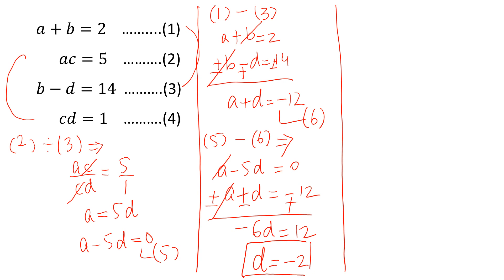Now put D is equal to minus 2 in equation 4. Minus 2 here, this is equal to 1. So C is equal to minus 1 over 2. This is the second value.